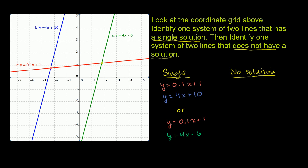There's no coordinate on the coordinate plane that satisfies both equations, so there's no x and y that satisfy both. A system that has no solution is y is equal to 4x plus 10, and the other one is y is equal to 4x minus 6. Notice they have the exact same slope and they're two different lines — they have different intercepts — so they never, ever intersect. And that's why they have no solutions.